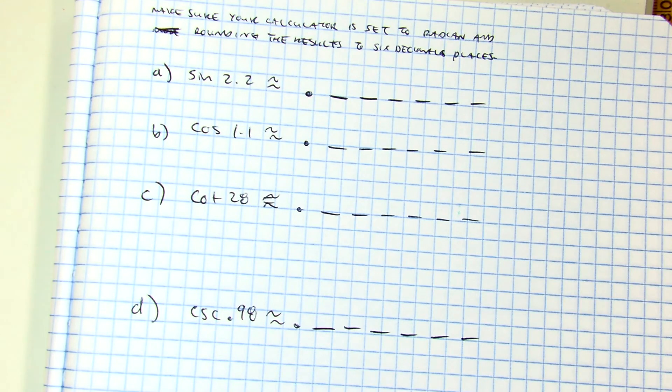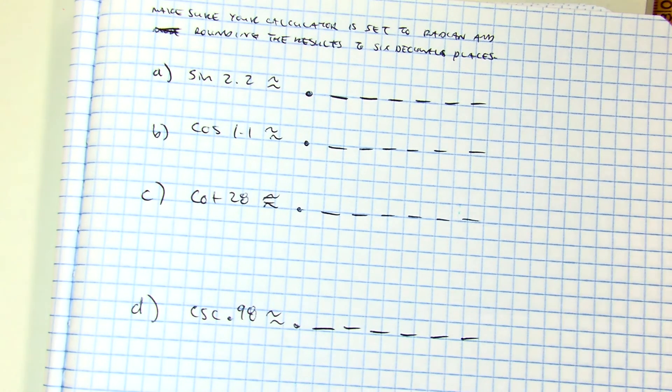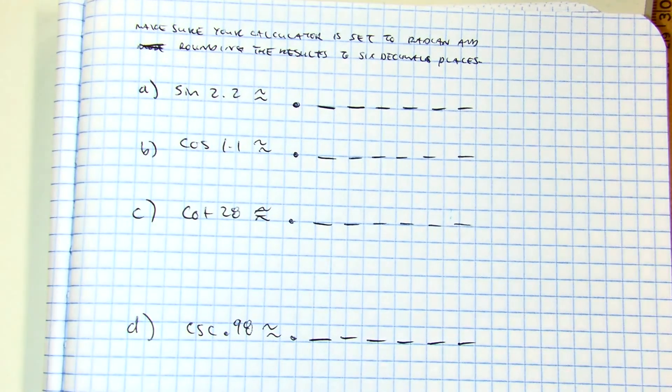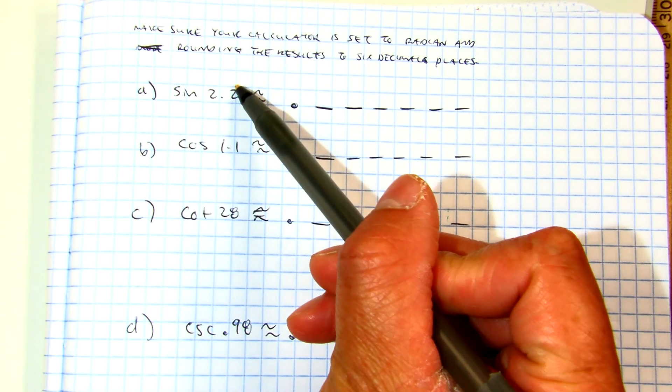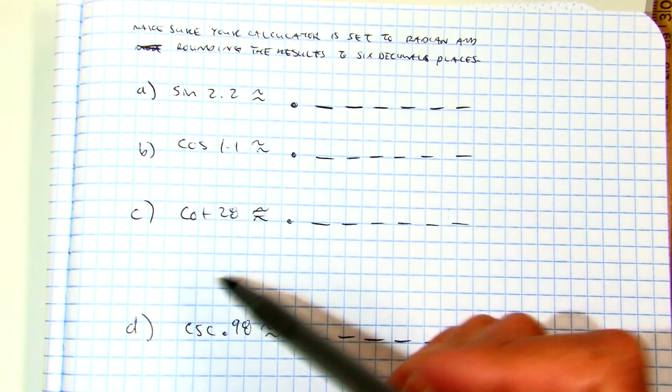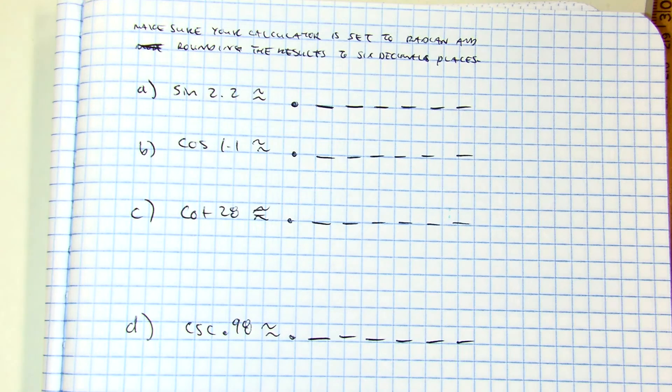Alright, make sure your calculator is in which mode? Radian mode. How did you guys know radian mode? There's no decimal, no degrees. And it tells you what? Radians. And round the results to six decimal places.